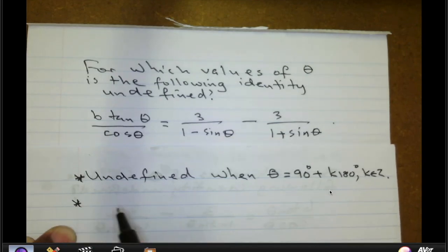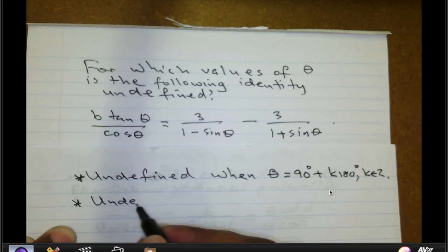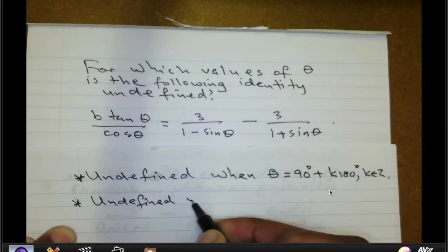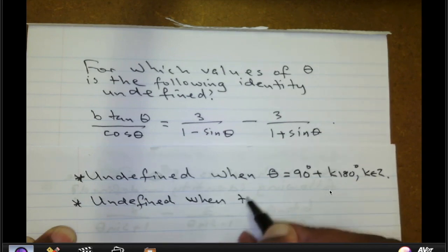But the other thing we need to check is obviously the denominators there because that is a fraction. So we expect that the identity will be undefined when the denominators are equal to 0.